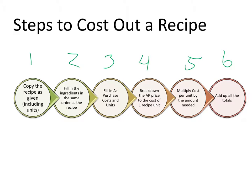Step two: fill in the ingredients in the same order as the recipe. Why is it important to go in the same order? So we don't miss something and keep it uniform — you make sure you're looking at your original recipe and writing it down in exactly the same order. Step three: fill in the as-purchased costs and units. The as-purchased cost is what you paid for it — when that 50-pound bag of flour came off the truck, you paid $21 for it.